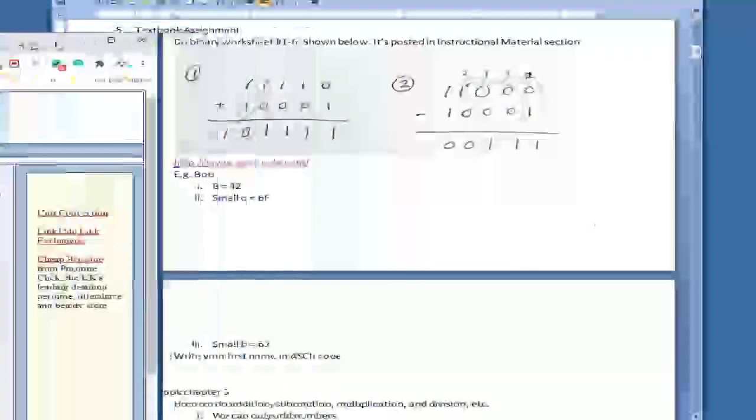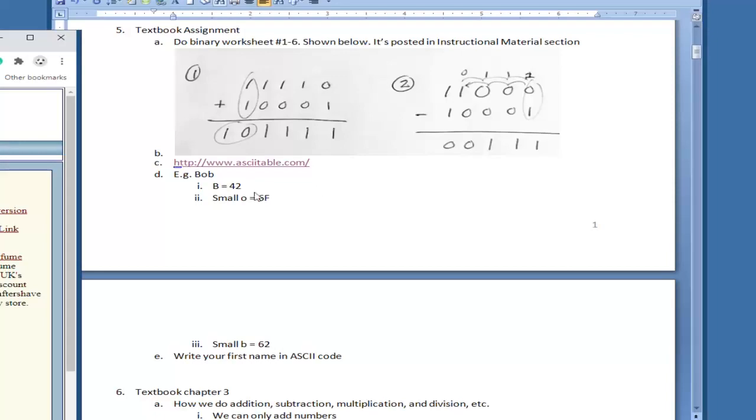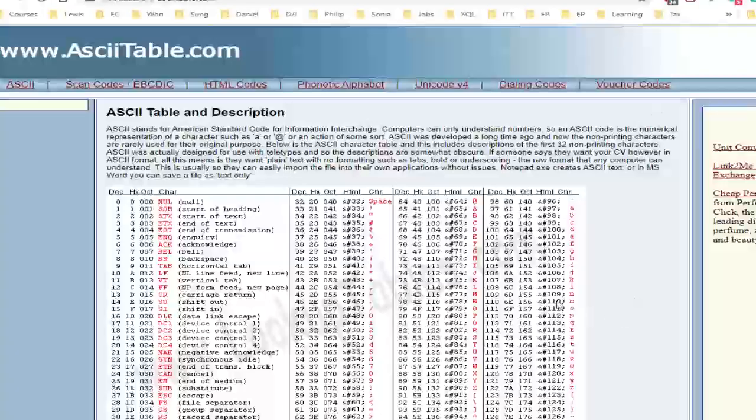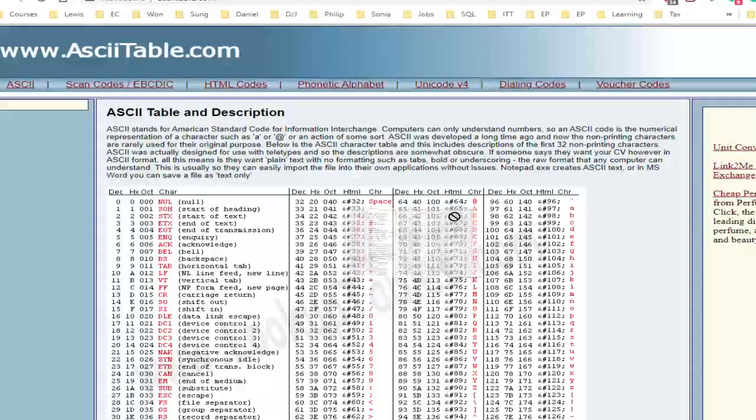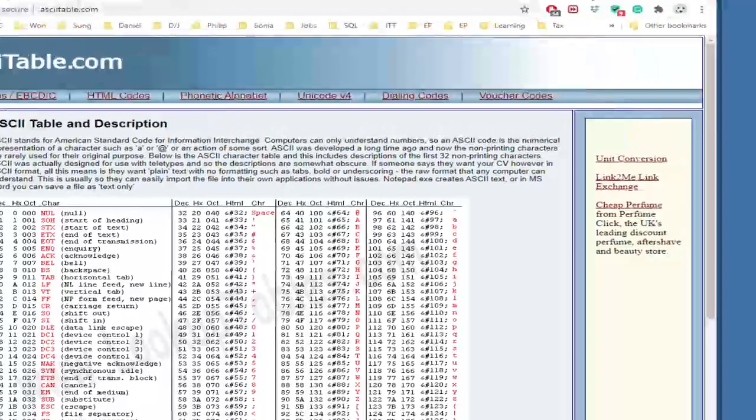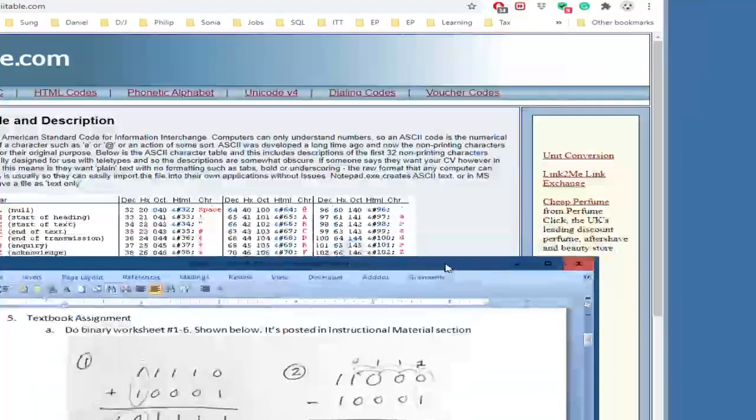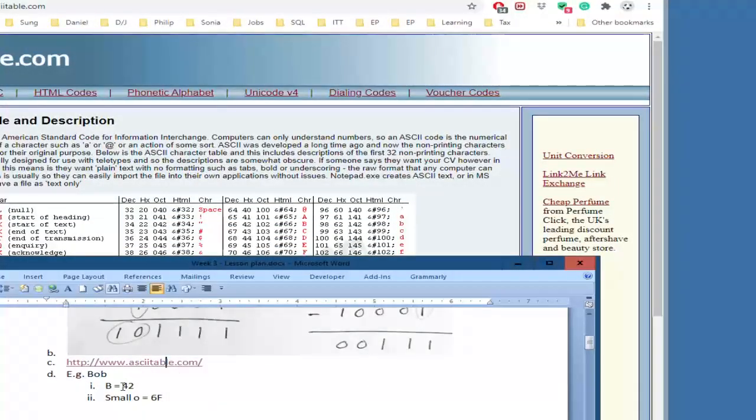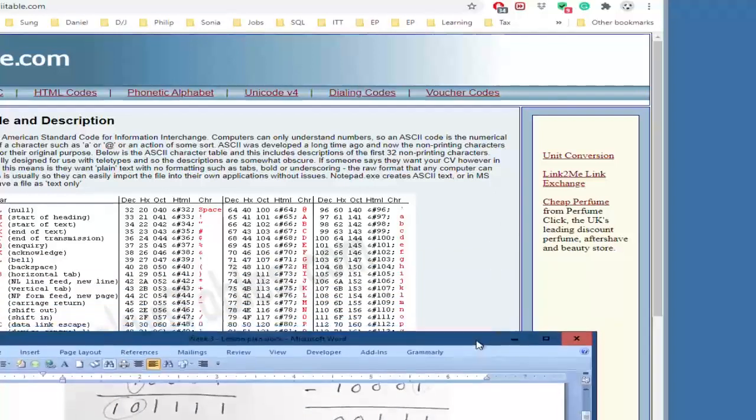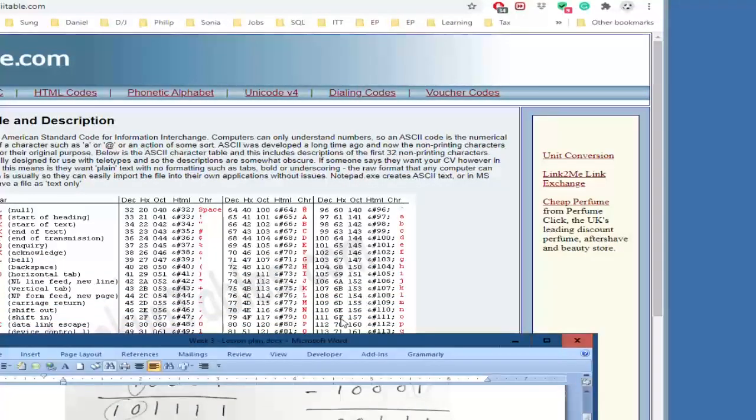If your name is Bob, capital B, then you come over here and look for capital B. Capital B is decimal 66, but more commonly we will represent this capital B with hexadecimal 42. So you would write 42 for B. Then O is a small o, so you come over here and look at the small o, and it will be 6F. B at the end of Bob is lowercase b, and it's hex 62.